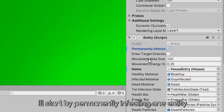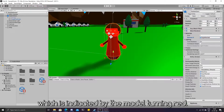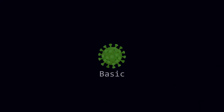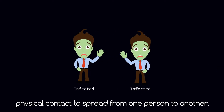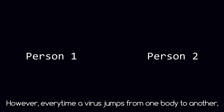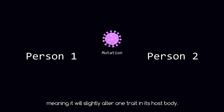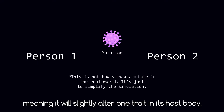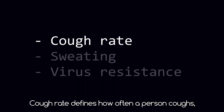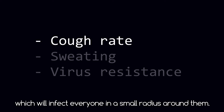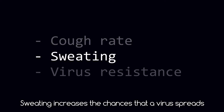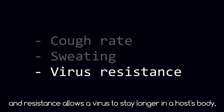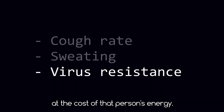I'll start by permanently infecting one entity in the simulation, which is indicated by the model turning red. At the start, the virus will be very basic, meaning it won't have any consequences on its host. The virus will have to rely on physical contact to spread from one person to another. However, every time a virus jumps from one body to another, it will have a small chance of mutating, meaning it will slightly alter one trait in its host body. At the moment, these traits are cough rate, sweat, and virus resistance. Cough rate defines how often a person coughs, which will infect everyone in a small radius around them. Sweat increases the chance that a virus spreads with physical contact, and resistance allows a virus to stay longer in its host body, at the cost of that person's energy.